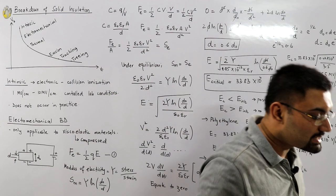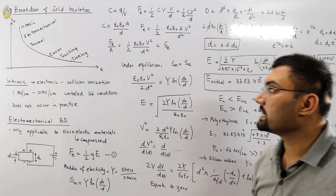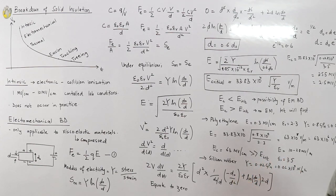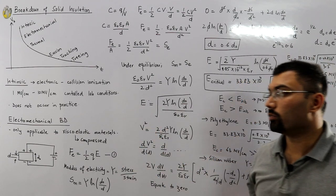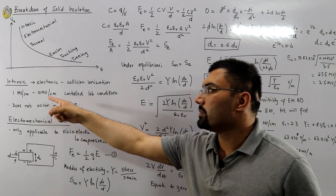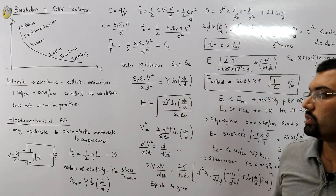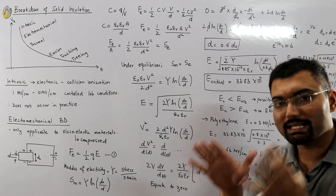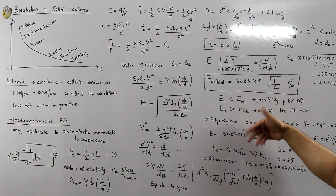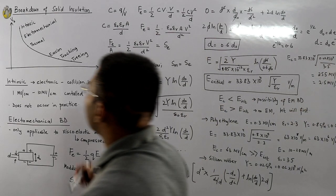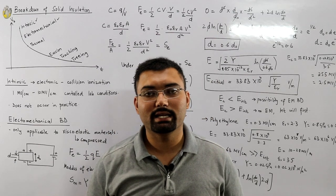To summarize: intrinsic breakdown is the same electronic/collision ionization phenomenon as in gases, occurring only in laboratory conditions. Electromechanical breakdown applies only to viscoelastic materials that can be compressed; the material compresses to a critical thickness of 0.6·d₀ before breakdown. In the next video we will study thermal instability and thermal breakdown.